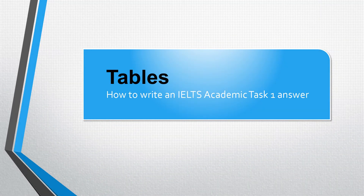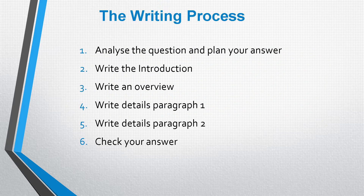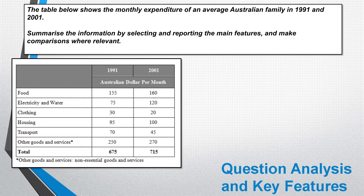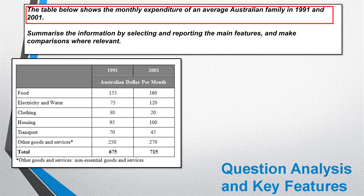We're moving on now to look at how we can analyse and write an answer when the visual data is presented as a table. Once more we'll be following the same procedure. And here is the table we're going to be looking at. The question reads: the table below shows the monthly expenditure of an average Australian family in 1991 and 2001. The different categories are listed down the side and also the total at the bottom — these are the items of expenditure or outgoings. We've got the left column which is 1991 and the right column which is 2001.